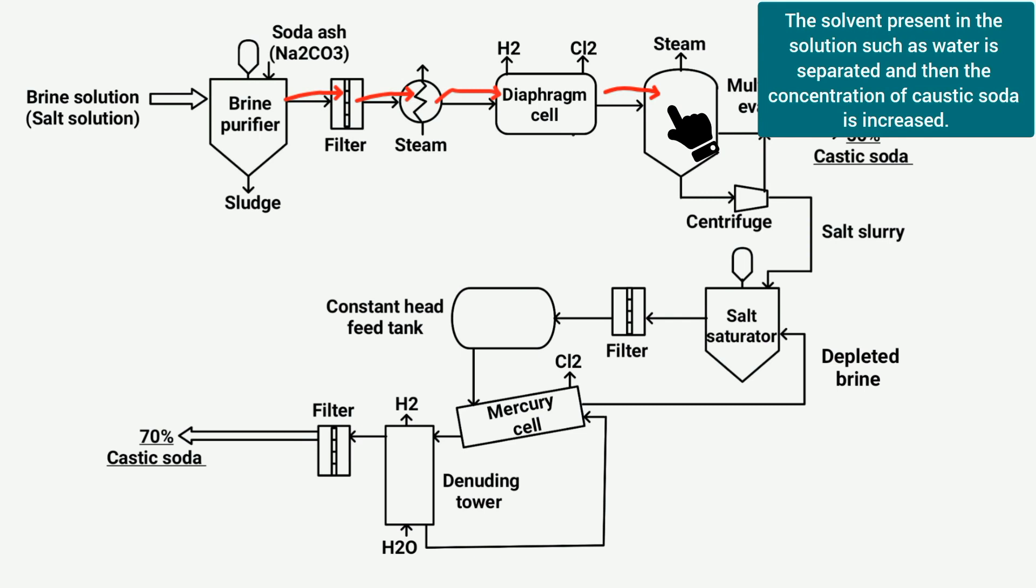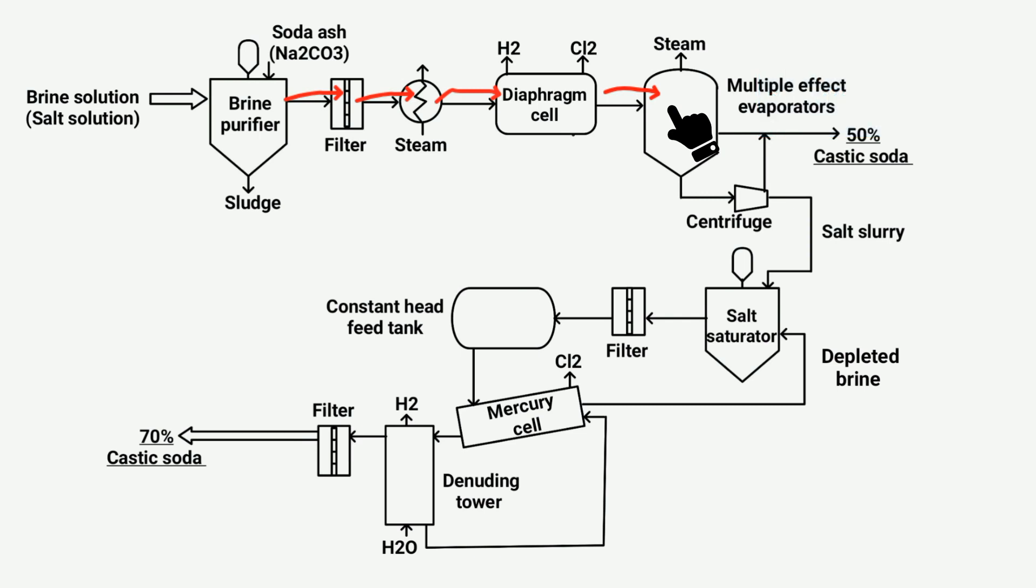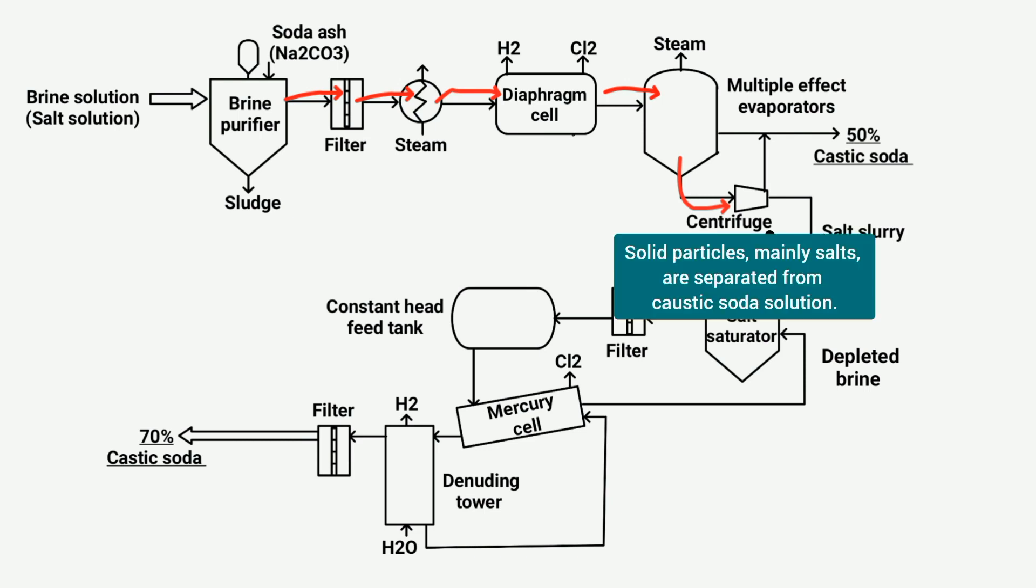increasing the concentration of caustic soda to around 50%. The solution obtained from the evaporators contains approximately 50% caustic soda, along with about 2% salt and 0.1-0.5% sodium hypochlorite. The solution is then sent to a centrifuge equipment, where caustic soda and solid particles are separated.